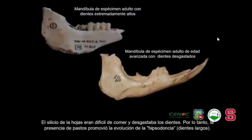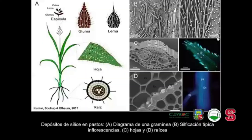Se puede observar una imagen de esta dentición mucho más larga y cómo después está este espécimen de adulto de edad avanzada, cuyos dientes se desgastaban por la presencia de silicio en los pastos. También hay imágenes que muestran la cantidad de silicio que hay tanto en hojas, en inflorescencias y en raíces.